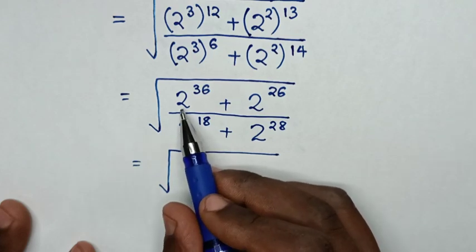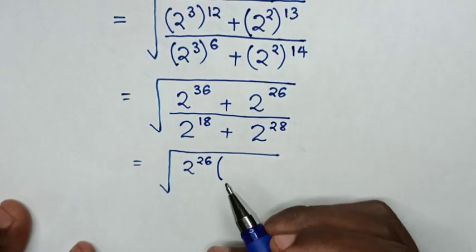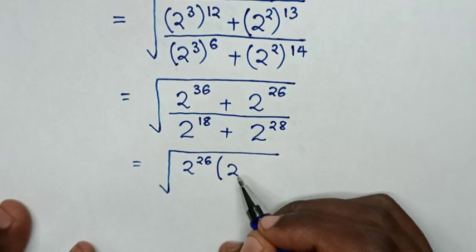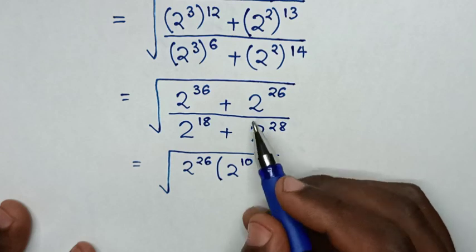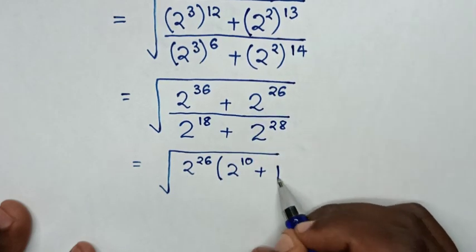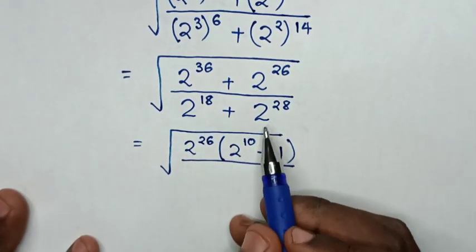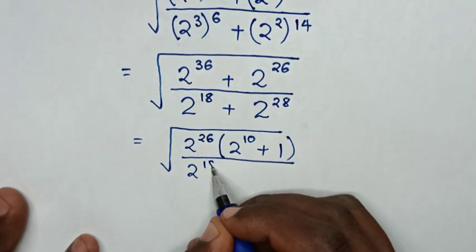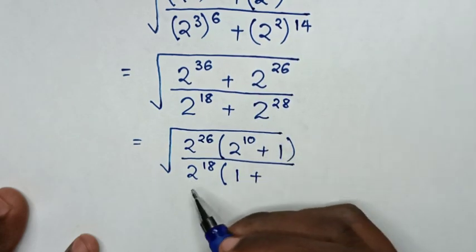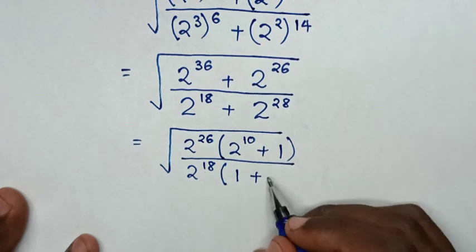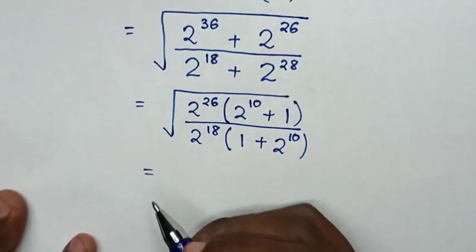In the numerator, 2 power of 26 is common, so we take it out of the bracket. 2³⁶ divided by 2²⁶ gives 2 power of 10, and 2²⁶ divided by 2²⁶ is 1, so we have 2²⁶ times (2 power 10 plus 1). In the denominator, 2 power of 18 is common, so we take 2 power 18 out of the bracket, giving 2¹⁸ times (1 plus 2 power of 28 minus 18, which is 2 power of 10).